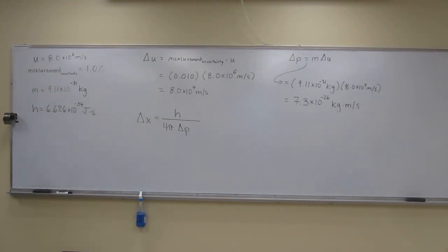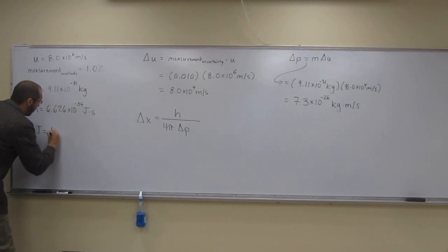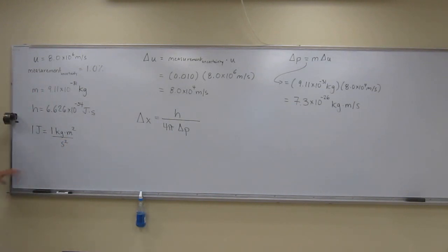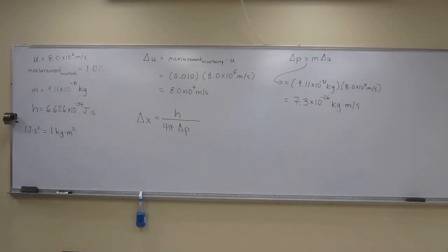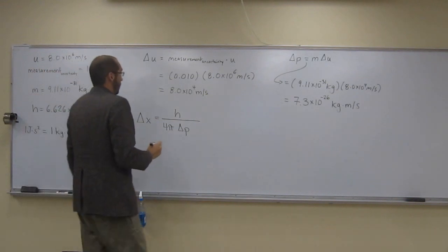So that's going to be 6.626 times 10 to the negative 34th joule seconds. The other thing you want to remember is the conversion factor: 1 joule equals 1 kilogram meter squared per second squared. Like that. But I like to rearrange this to say, take these second squares and put them up here. So we've got 1 joule second squared equals 1 kilogram meter squared. It'll be easier on us.